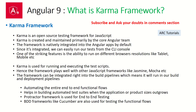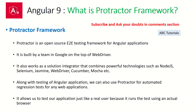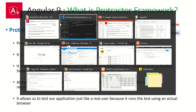Protractor is used for end-to-end testing. Jasmine and Karma are used for unit testing, and we use Protractor for end-to-end testing. Protractor is an open source E2E testing framework for Angular applications. It is built by the Google team on top of WebDriver. It also works as a solution integrator that combines powerful technologies like Node.js, Jasmine, WebDriver, Cucumber, Mocha, etc. Along with testing Angular applications, we can also use Protractor for automated regression tests. It allows us to test our application just like a real user.